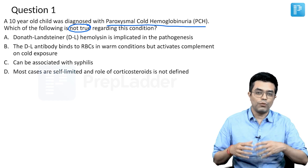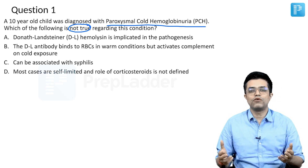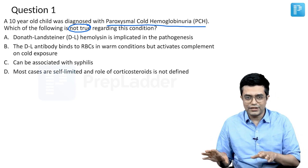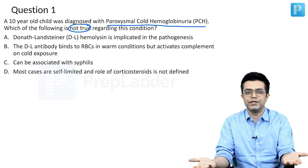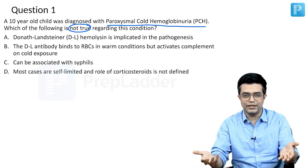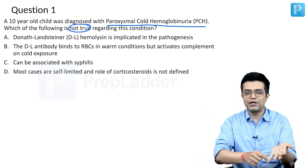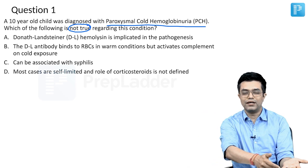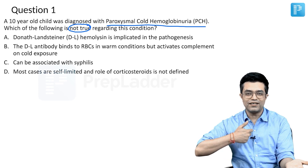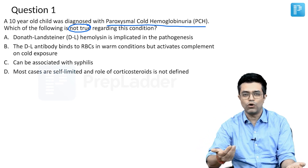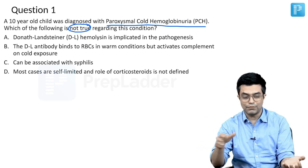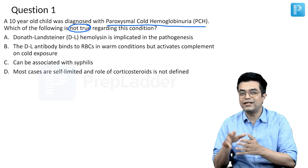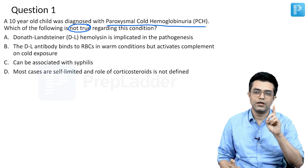Sometimes without rewarming, a PCH acute episode can also manifest. If a predisposed child has cold peripheries, the antibodies in the body bind to RBCs in the peripheral circulation. When these antibody-bound RBCs move to the central part of the body, which is relatively warmer at around 37°C compared to peripheries at 32–33°C, hemolysis occurs in the warm environment. This is a very important point.